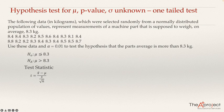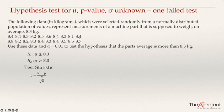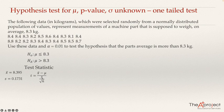The null hypothesis uses an equals sign, as most researchers write it — the opposite of the alternative. Using Excel to compute the mean of all 20 data points, the sample mean is 8.395. The sample standard deviation s is 0.1731. This value of s is the standard deviation of all 20 data points.